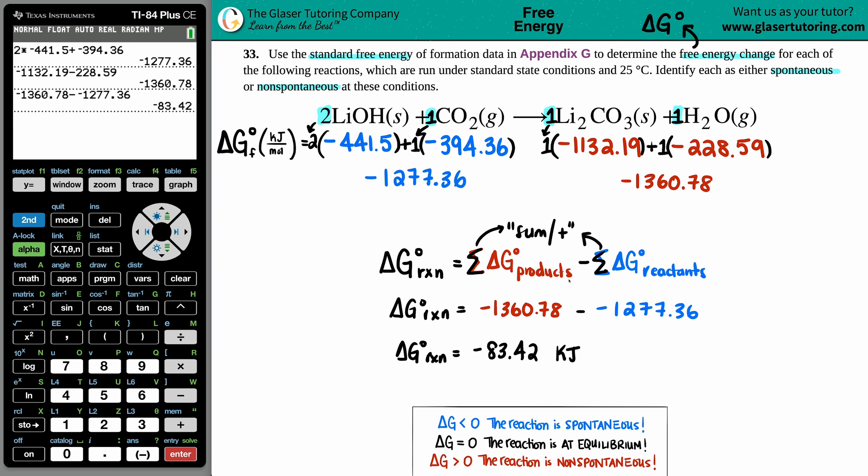Your units for ΔG is just kilojoules, not kilojoules per mole, because these coefficients that you multiplied by are your mole values. So if you have kilojoules per mole times a mole value, the moles will cancel out leaving you with just kilojoules.